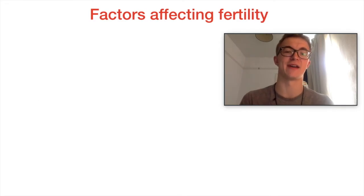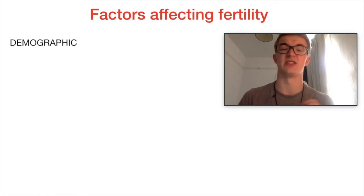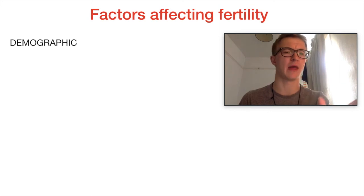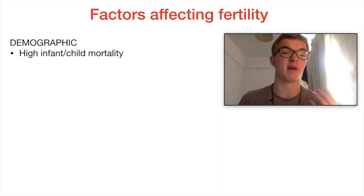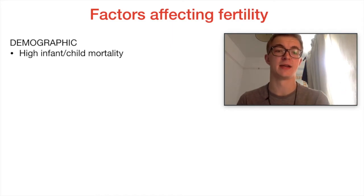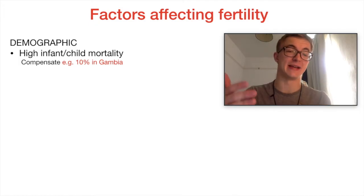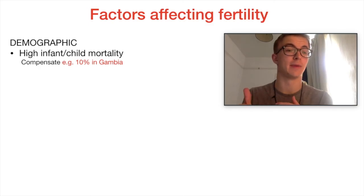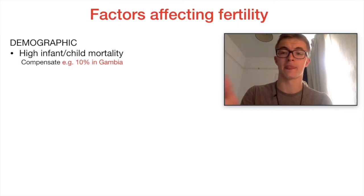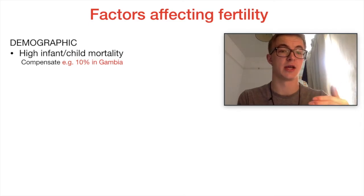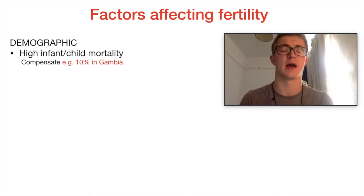Now let's go into factors that affect fertility. The first is demography itself. It's acutely relevant when thinking about infant and child mortality. A lot of countries with very high fertility rates show an incidence of trying to compensate — if you have a child and it dies below the age of one or five, you're likely to try and have another child. When you have a high infant mortality rate — a couple of years ago it was around 10% in Gambia — there's a likelihood you might have another child to replace the one sadly lost. That's how demography can affect demography, which is an interesting concept.